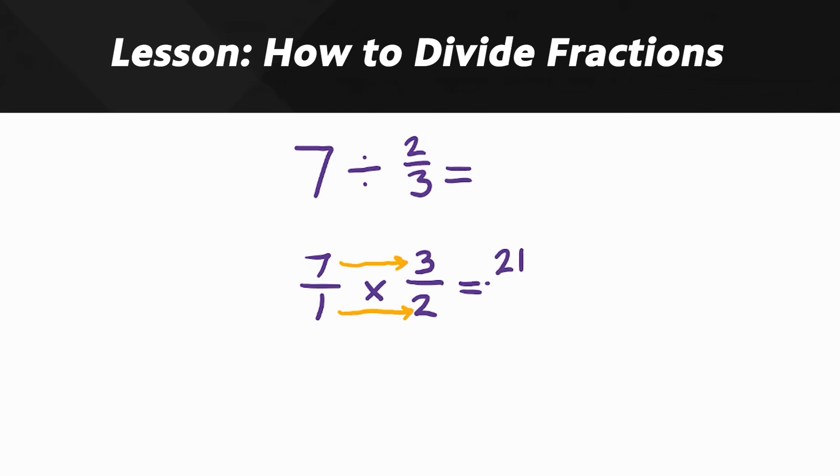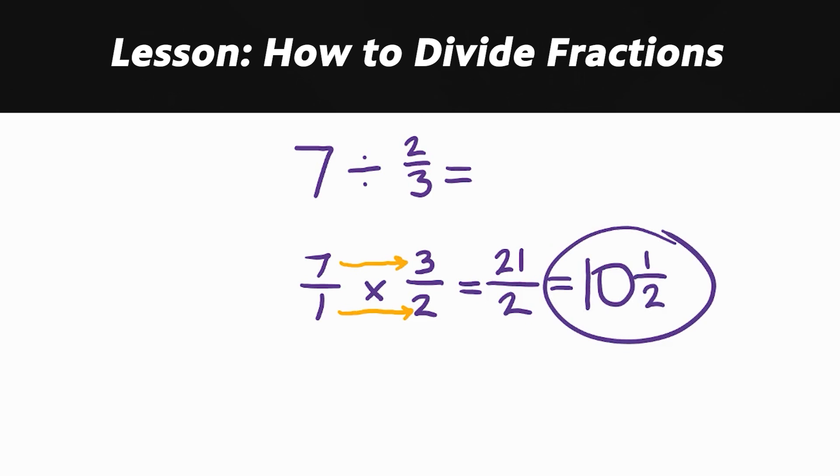We have 21 over two which is obviously improper, so let's fix it. Two goes into 21 ten times and there'd be one left over, so that makes 10 and one over two as our final answer.